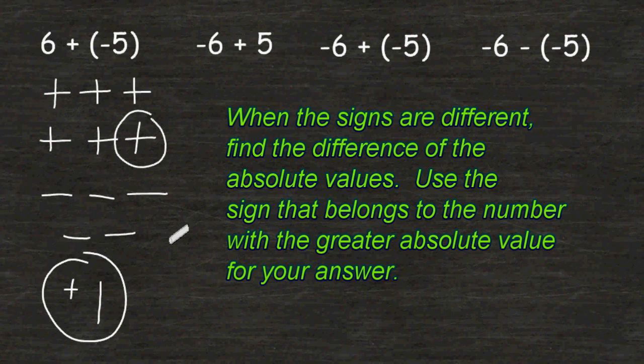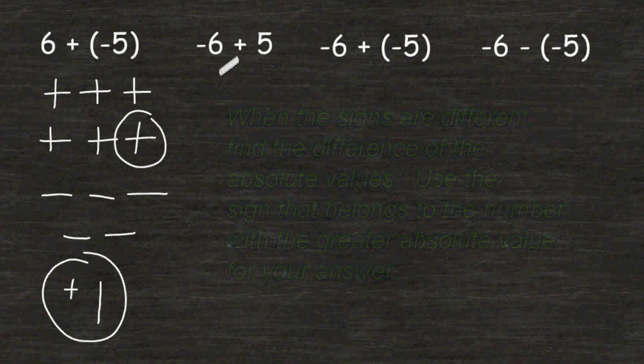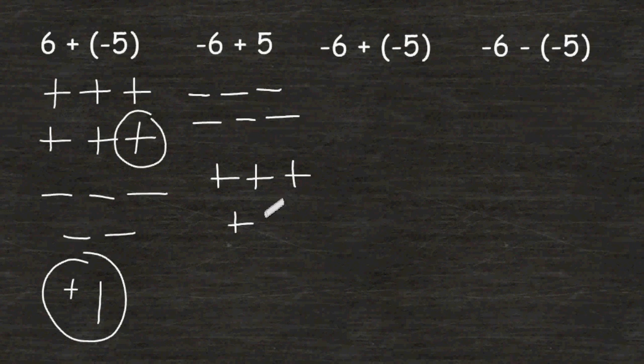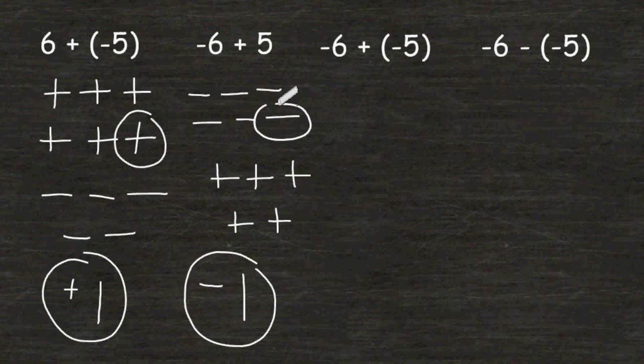So 6 plus negative 5 is equal to positive 1. Now example number 2 is the exact opposite of example number 1. We have 6 negatives added to 5 positives. And this time, we have more negatives than we have positives, therefore the answer is negative. And because we have different signs, we still must find the difference of the absolute values. 6 take away 5 is equal to 1. So we could say that we had one more negative than we had positives.